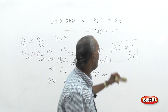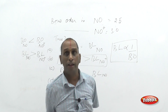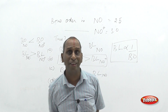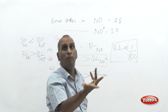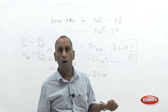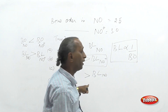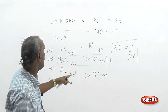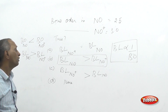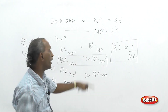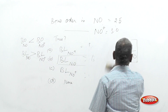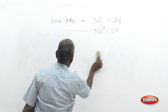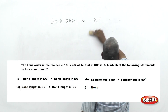In general, bond order varies inversely with bond length — higher bond order means lower bond length. Given the bond order values, they cannot be equal, so the equality choice is wrong, and 'none is true' is also incorrect. The correct answer is choice two: bond length of nitric oxide is higher than that of nitrosyl cation. The key concept is the inverse relationship between bond length and bond order.